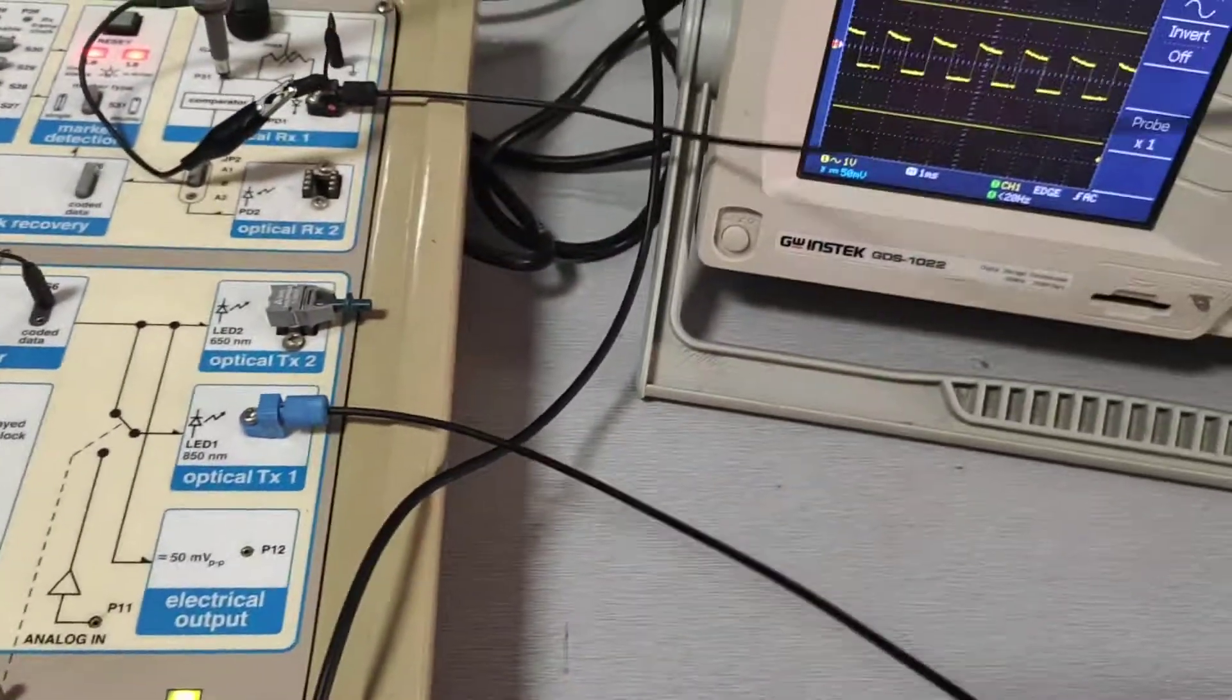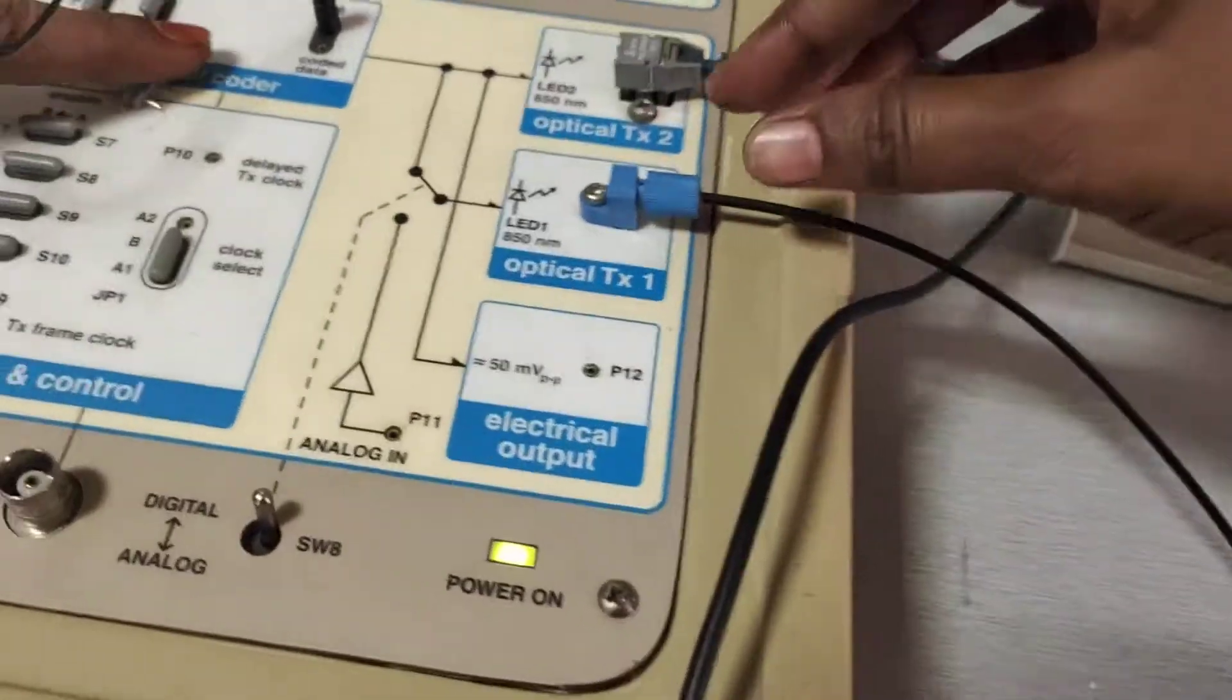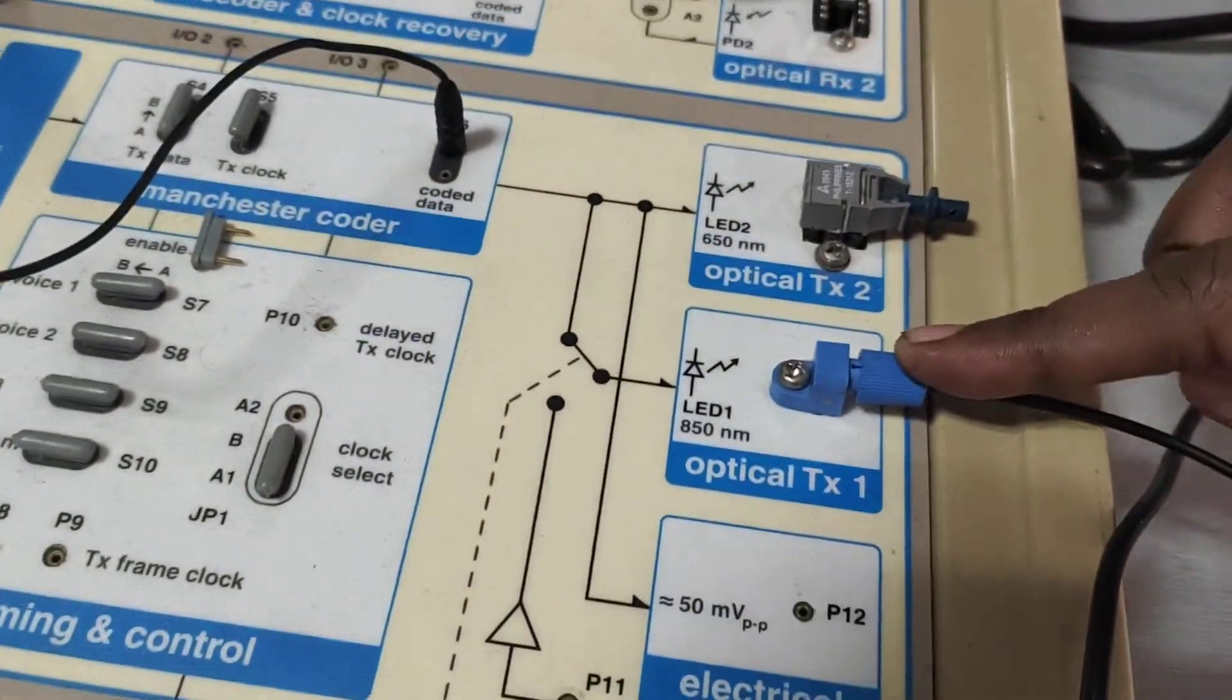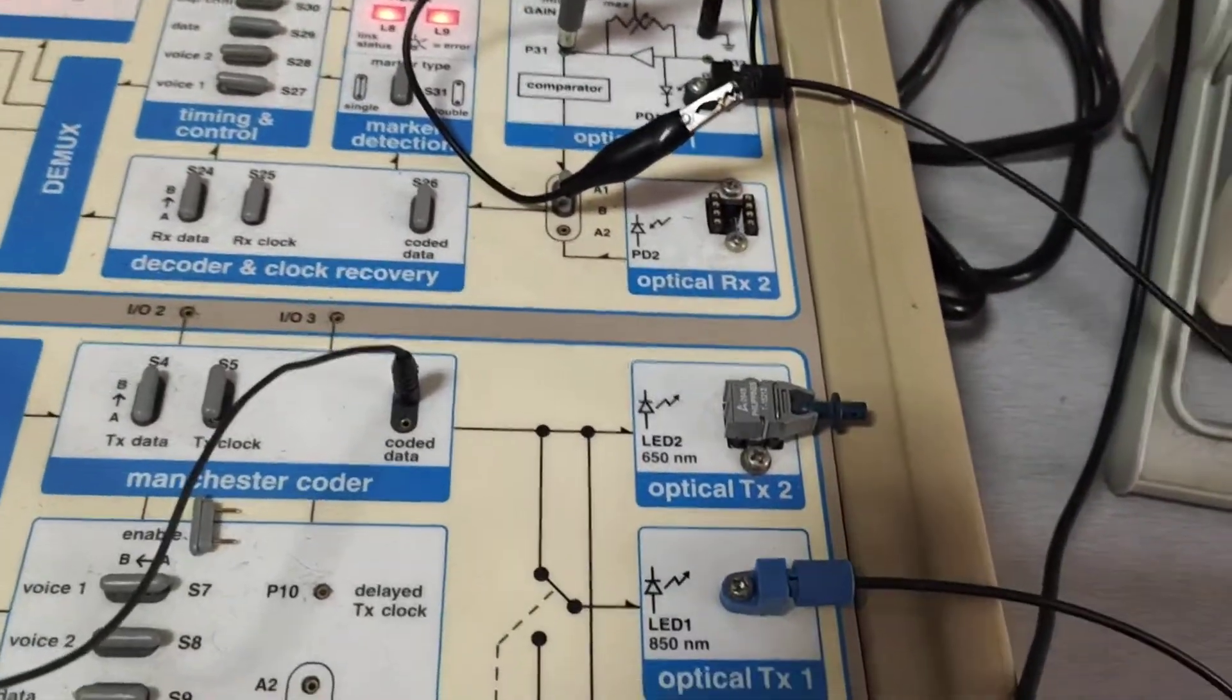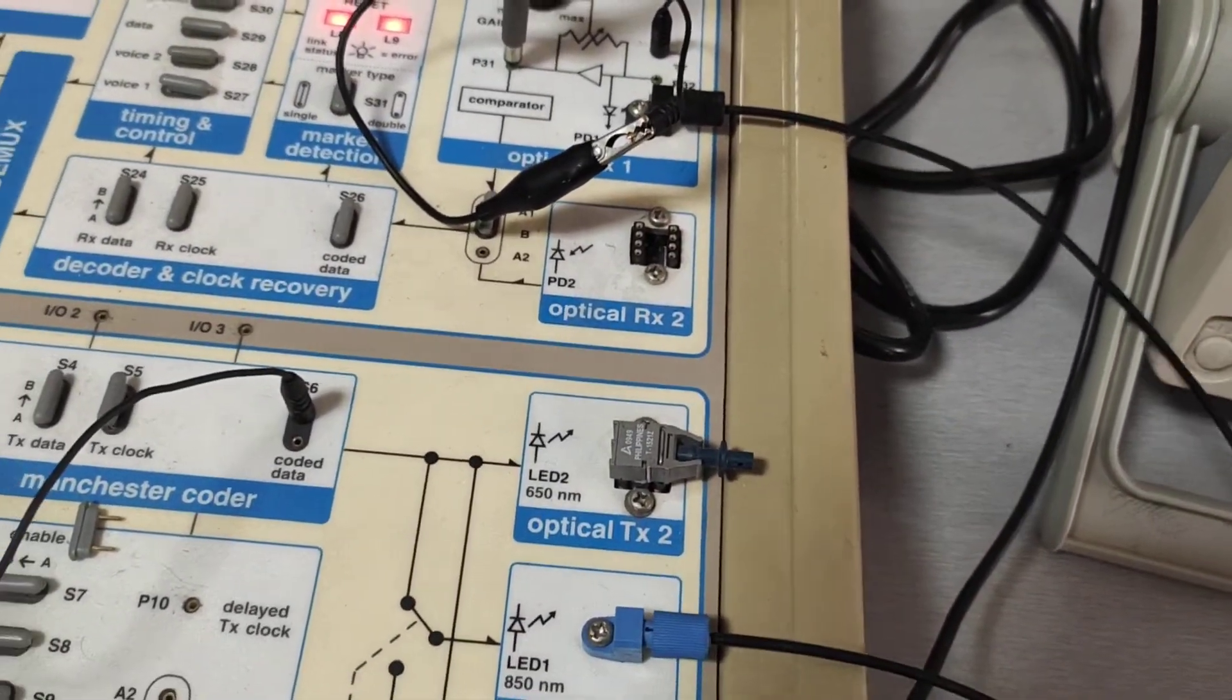Same 1 meter Fiber Optic cable is considered. One end is connected to Transmitter 1 and another end is connected to PD1. The same thing what we have done in the previous experiment.